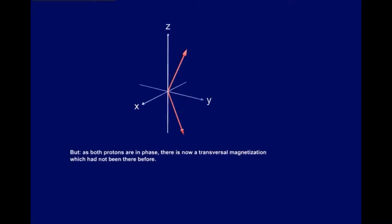But, as both protons are in phase, there is a new transversal magnetization, which had not been there before. Try to imagine tilting a longitudinal magnetic vector ninety degrees to the side. The RF pulse tilts the longitudinal magnetic vector ninety degrees to the side.